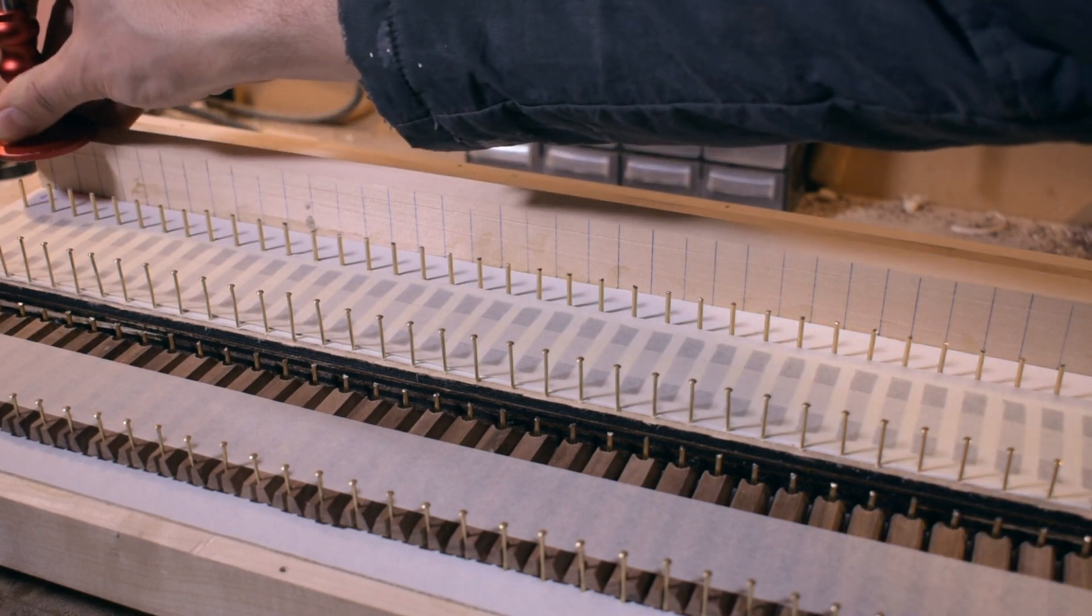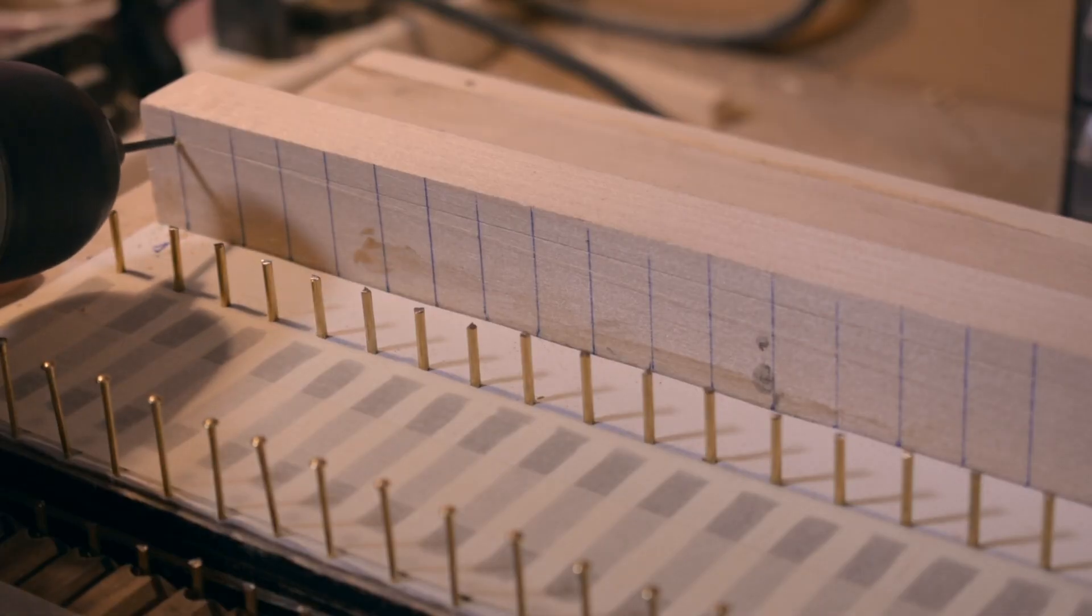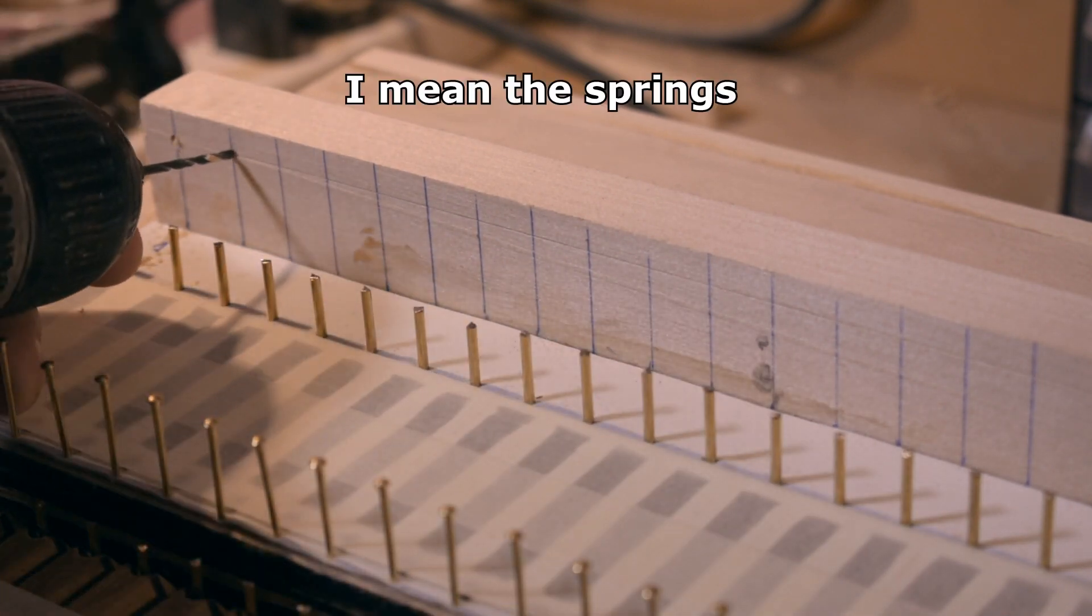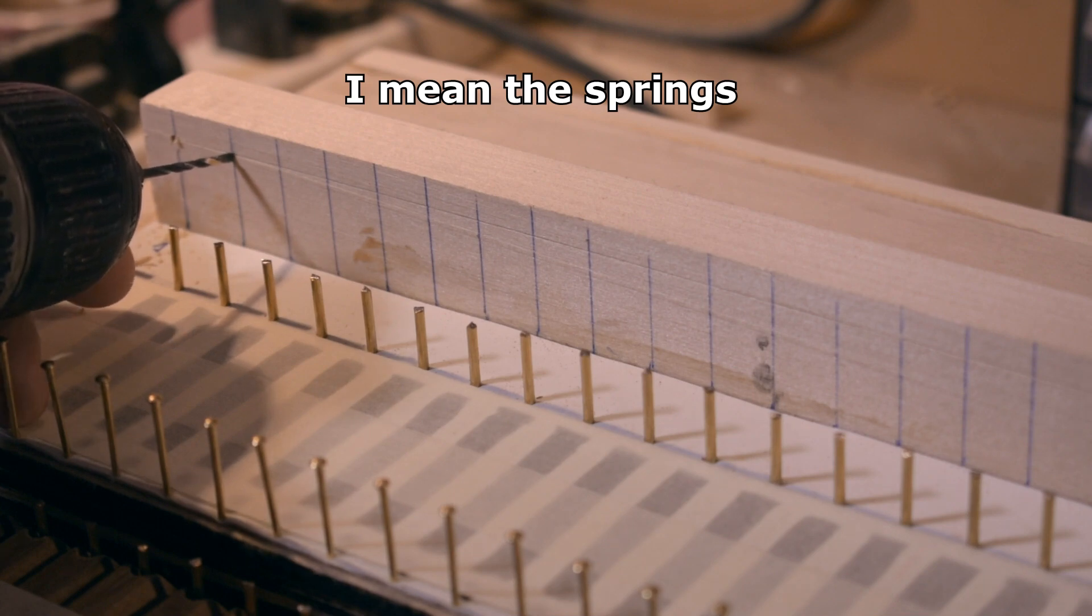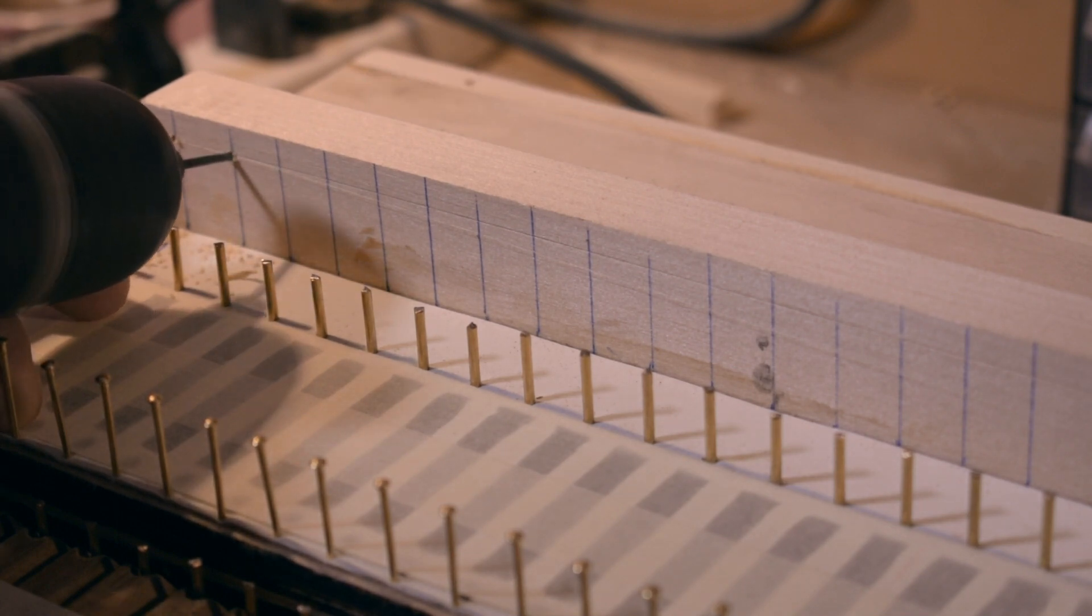First of all, I drill the holes for the spring housing of the first manual, which will be different from those of the second manual, which will have a classic design. This is because the height of the pallet box is limited and the classic springs take up too much space.